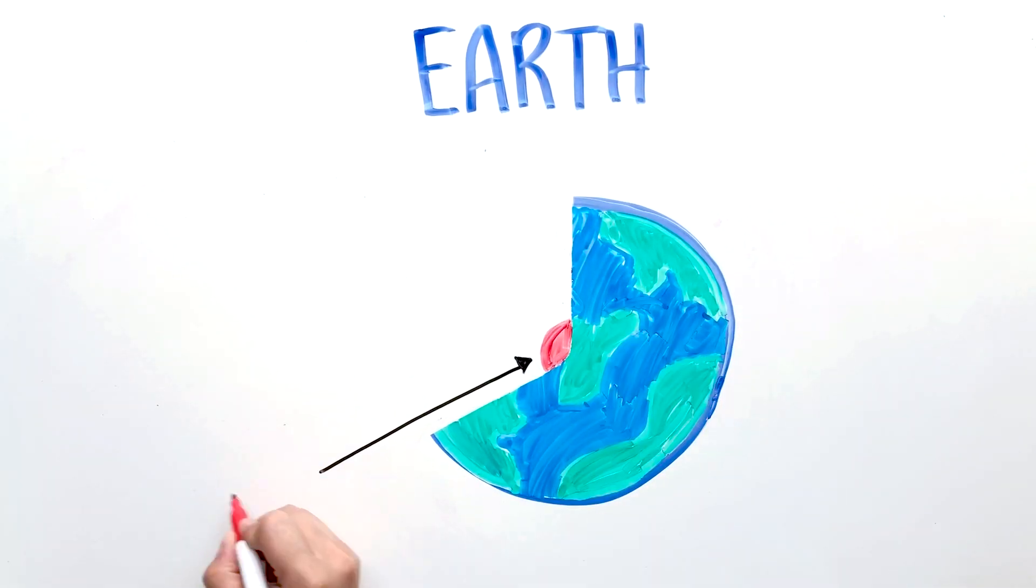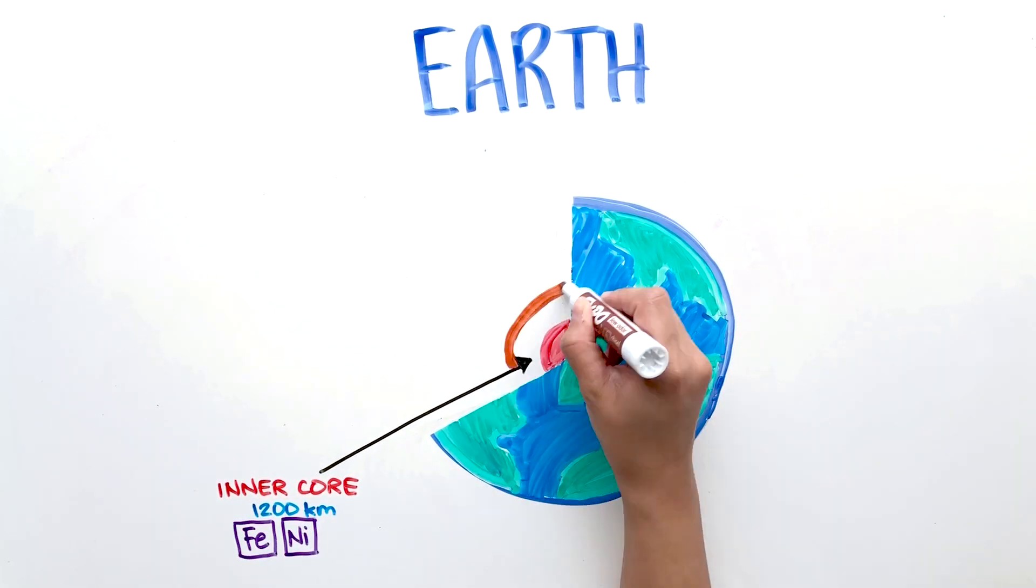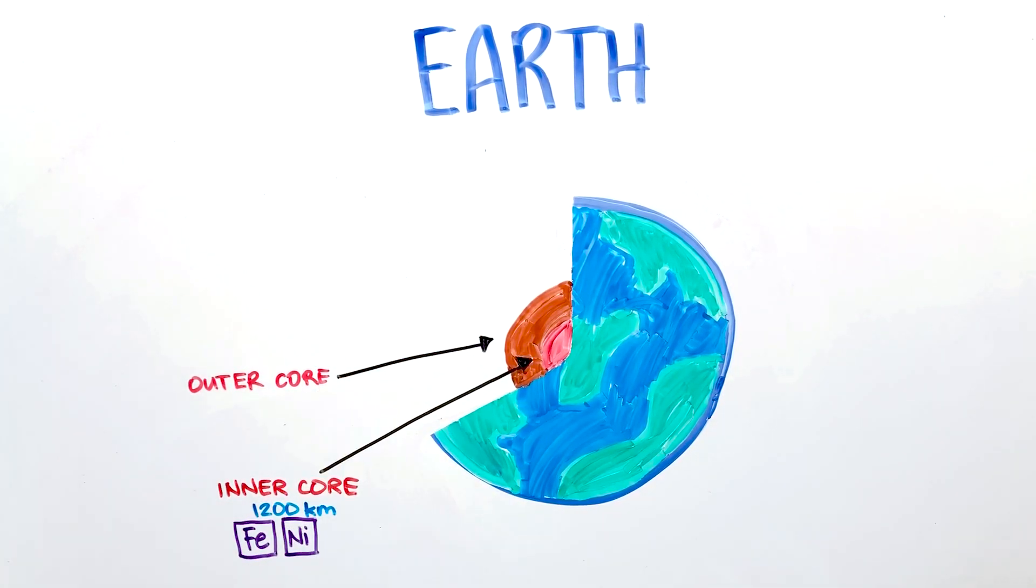Earth's interior has an inner core that is solid and is made up of iron and nickel. An outer core that is also made up of iron and nickel, but the pressure in there is less than the inner core, which makes it a liquid.